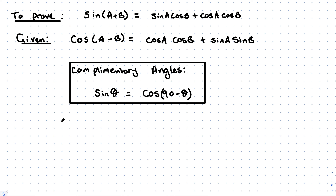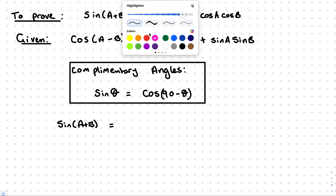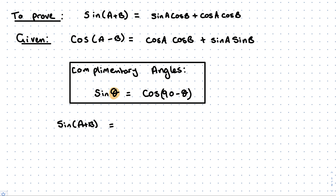So what I'm going to do is start with sine of a plus b and turn it into cos of something. Since sine of a plus b is equal to cos of 90 minus that same theta, then sine of a plus b — with a plus b being our theta — is equivalent to cos of 90 minus (a plus b). So all I've done is use the complementary angles to find out how I can connect sine and cos together.